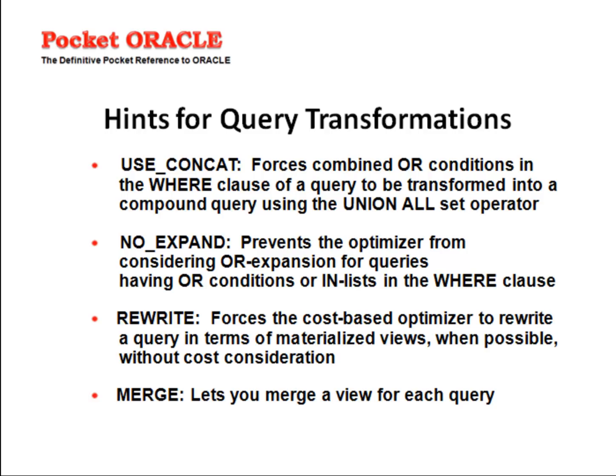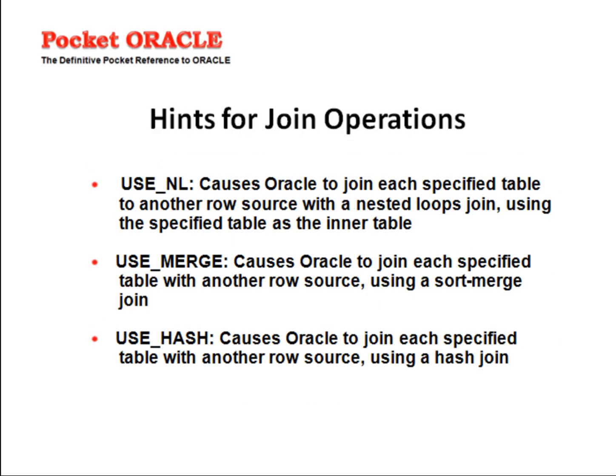The MERGE hint lets you merge a view for each query. Hints for join operations — USE_NL: USE_NL causes Oracle to join each specified table to another row source with a nested loops join, using the specified table as the inner table. Works well if there is an index in the second driven table. The best selective table should be the driver. USE_MERGE causes Oracle to join each specified table with another row source using a sort merge join.